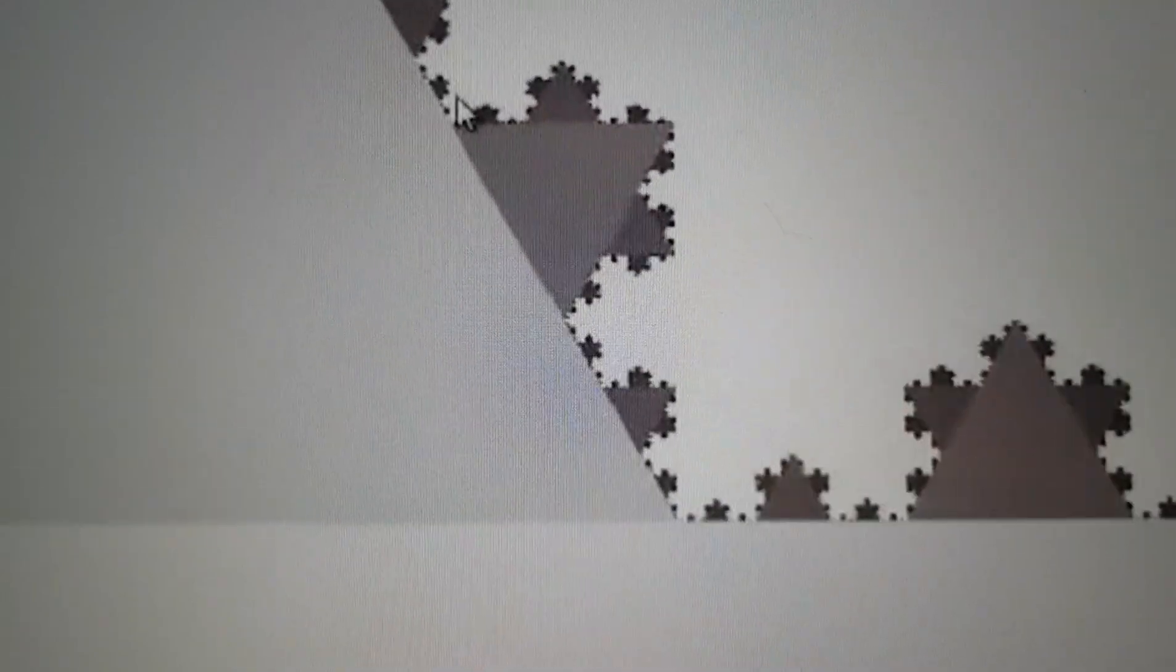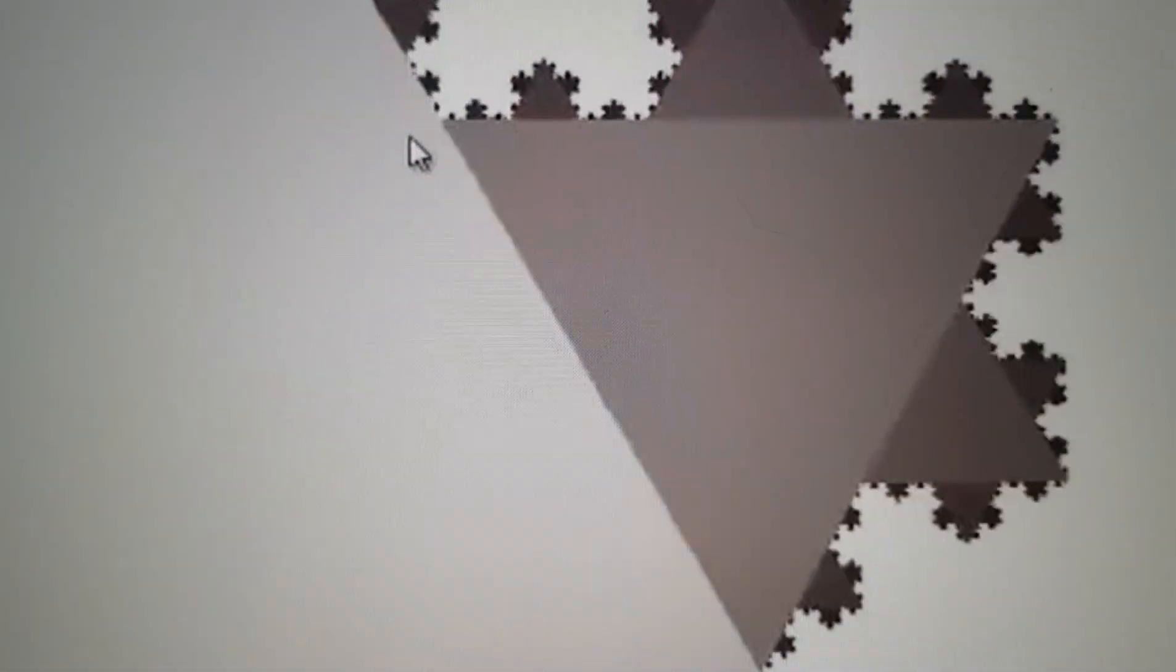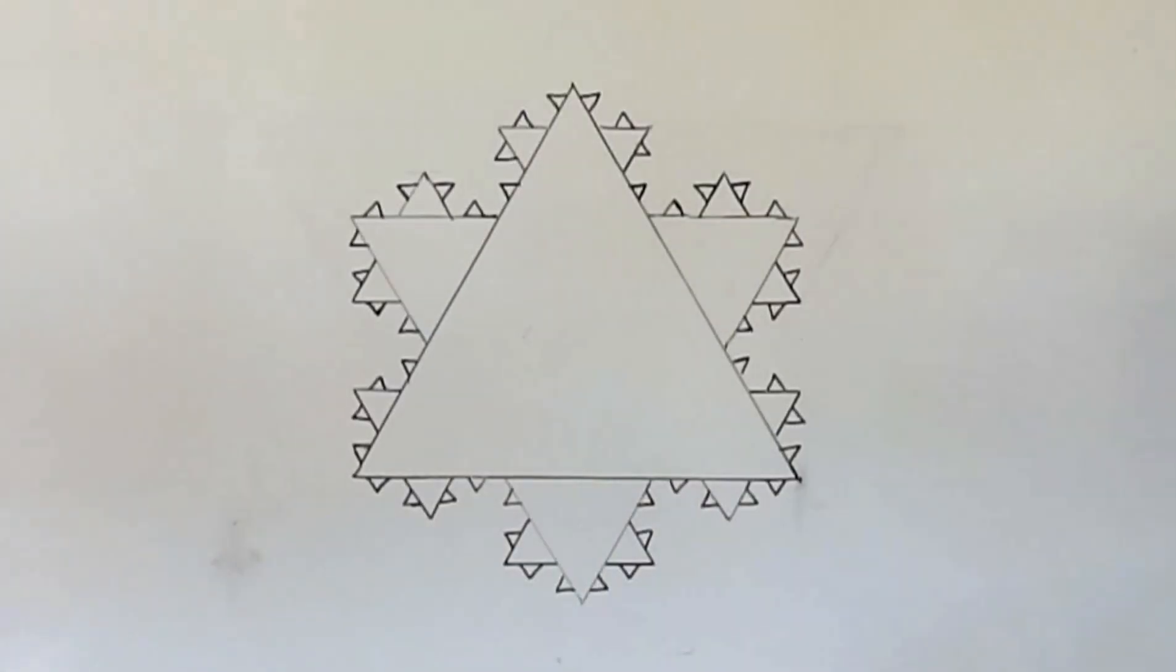The Koch snowflake is a continuous curve which does not have a tangent to any point. The progression of the area for the snowflake gets closer to 8 over 5 times the area of the original triangle. This was one of the first discovered fractals.